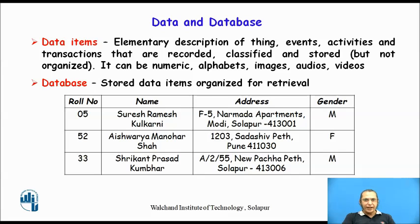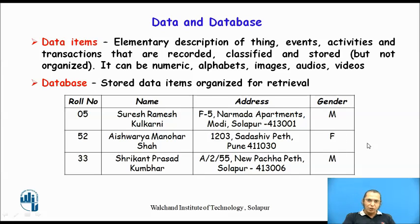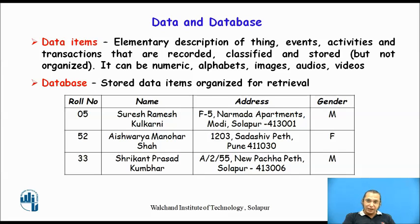Storing the data in this manner can help. For example, if I want to know the address of the student whose role number is 5, I can go there, find role number 5, and find out the address. Similarly, suppose I want to query how many boys and how many girls are there in a class, then I need to filter the male and female column and through the database management system I can find that out. Storing data in a systematic way makes retrieval easy and allows information to be generated.